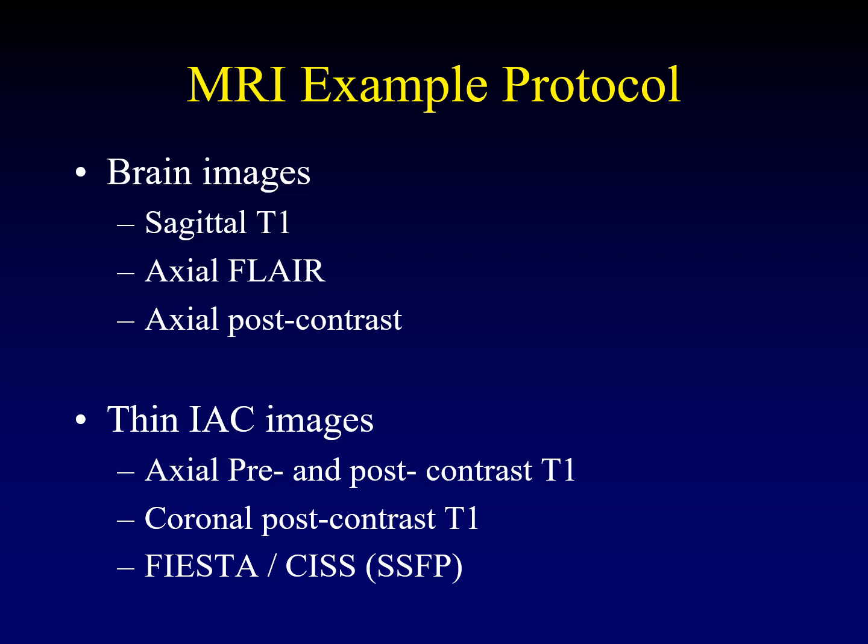For MRI, there are basic images of the brain that are included in the protocol: sagittal T1, axial FLAIR, axial post-contrast, and we usually add a few others. The IAC-specific images include pre- and post-contrast T1. You definitely want some coronal post-contrast, and perhaps most importantly of all, the high-resolution heavily T2-weighted sequences — on GE scanners those are called FIESTA, on most other manufacturers KISS, but the generic term is steady-state free precession, which works across all scanners.